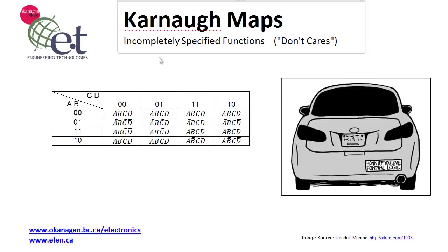This is David Williams and in this video I'm going to show you how to use Karnaugh maps to figure out the logic function for incompletely specified functions. Sometimes there are combinations of inputs that can't possibly occur or can simply be ignored — in other words, you don't care about what the value is for that particular input. This can be used to your advantage when using K-maps to simplify the logic expression.